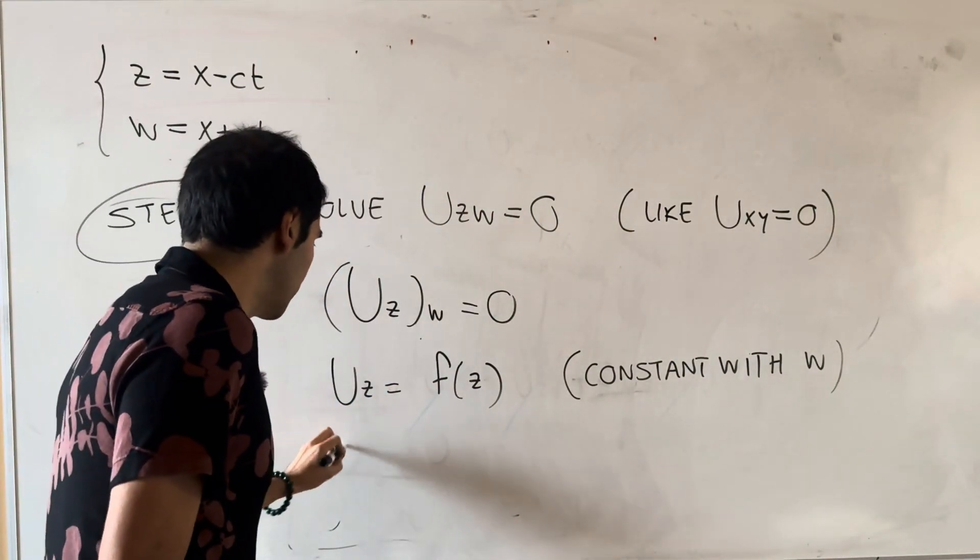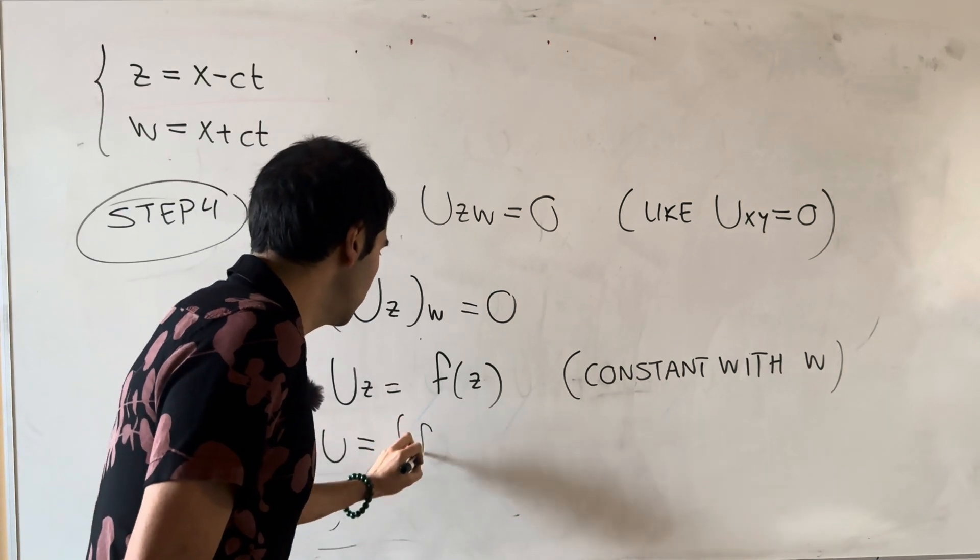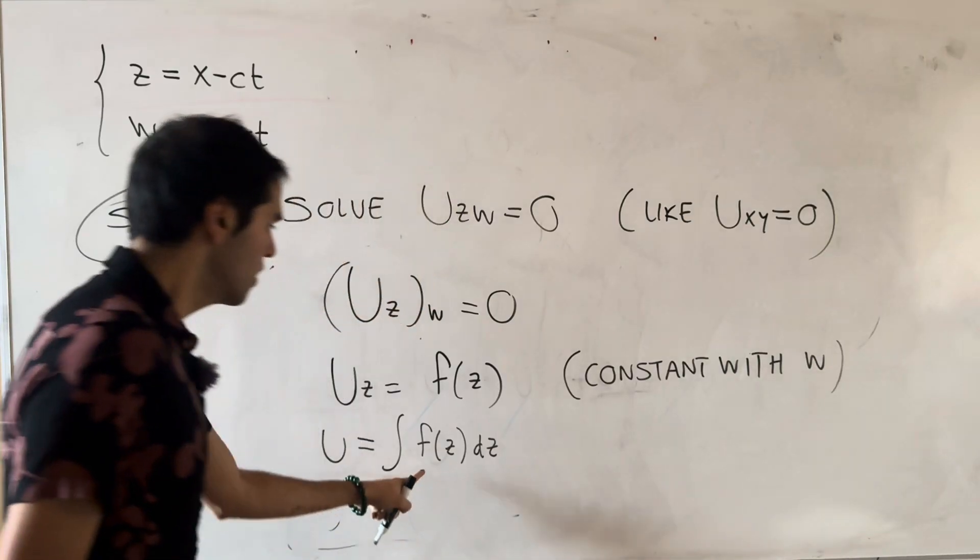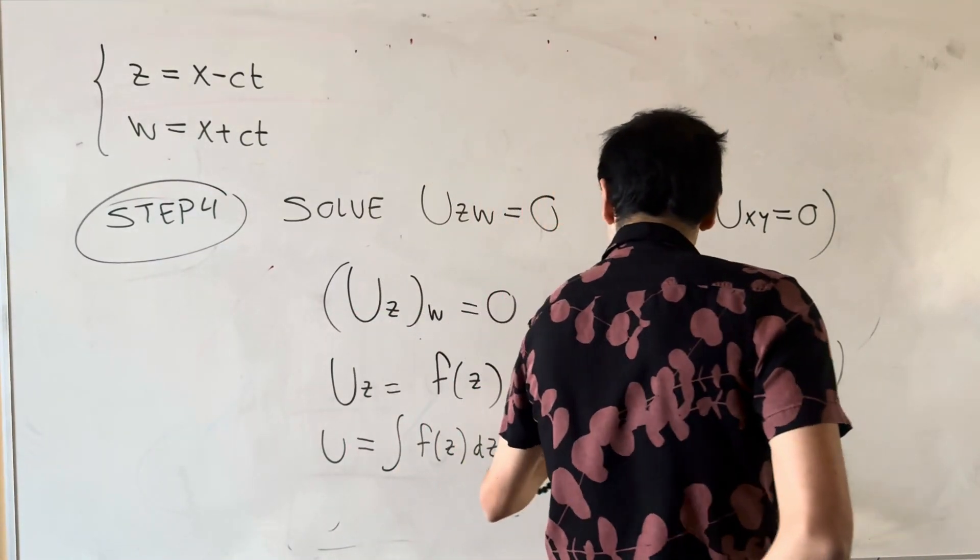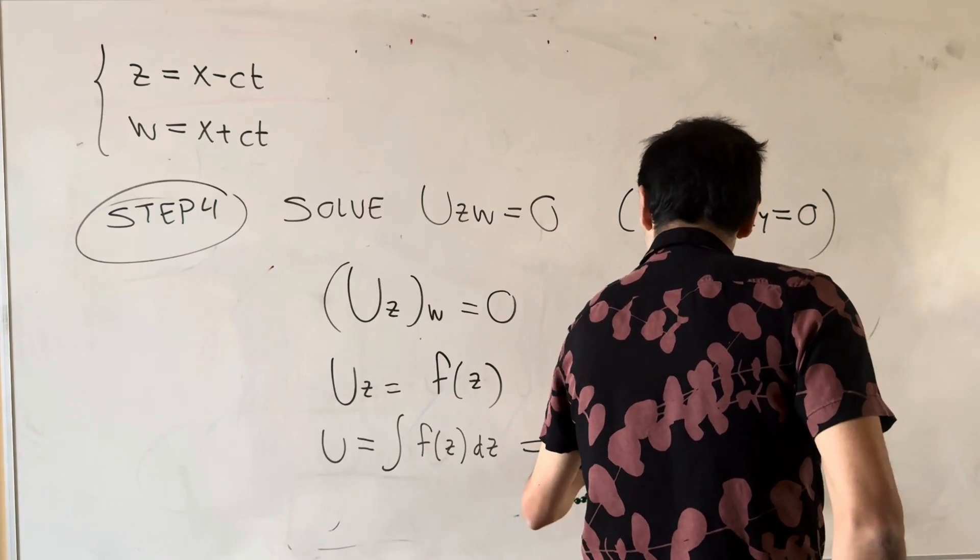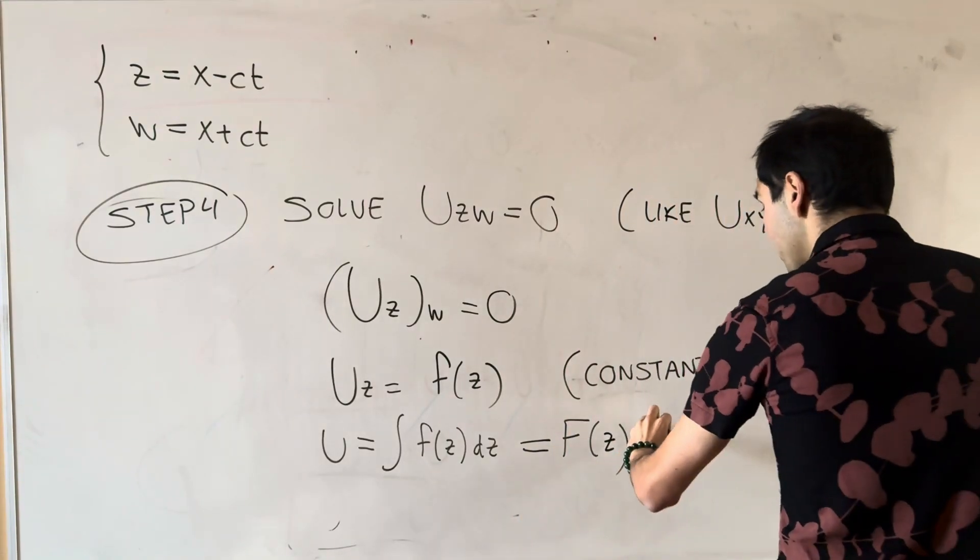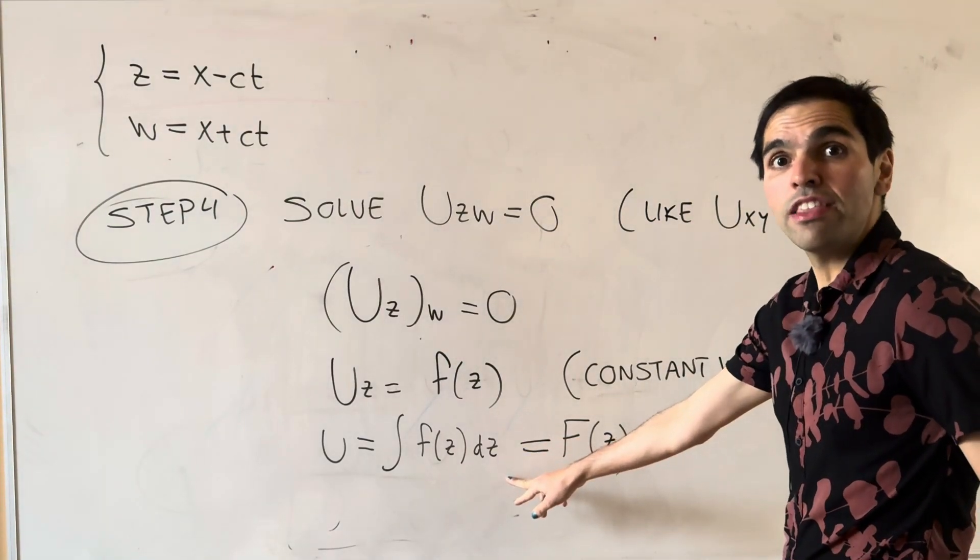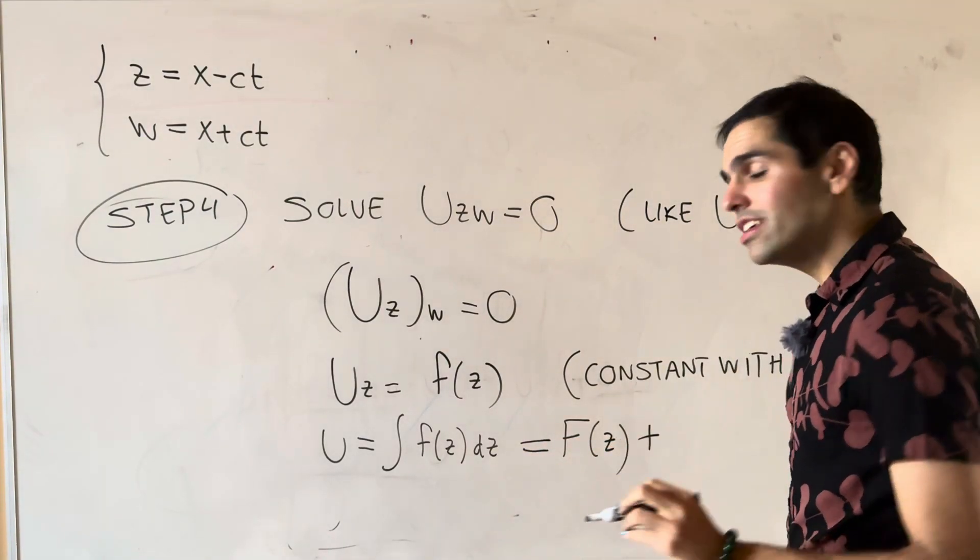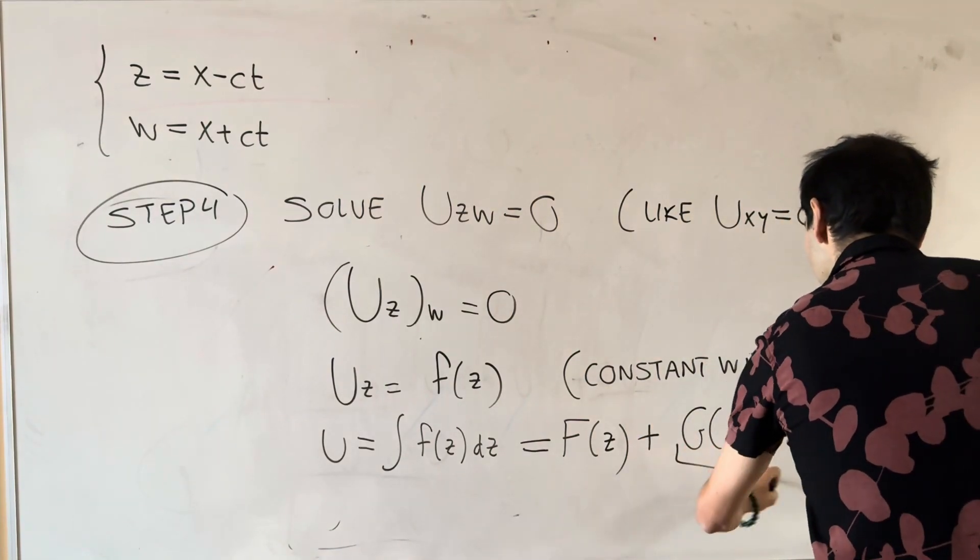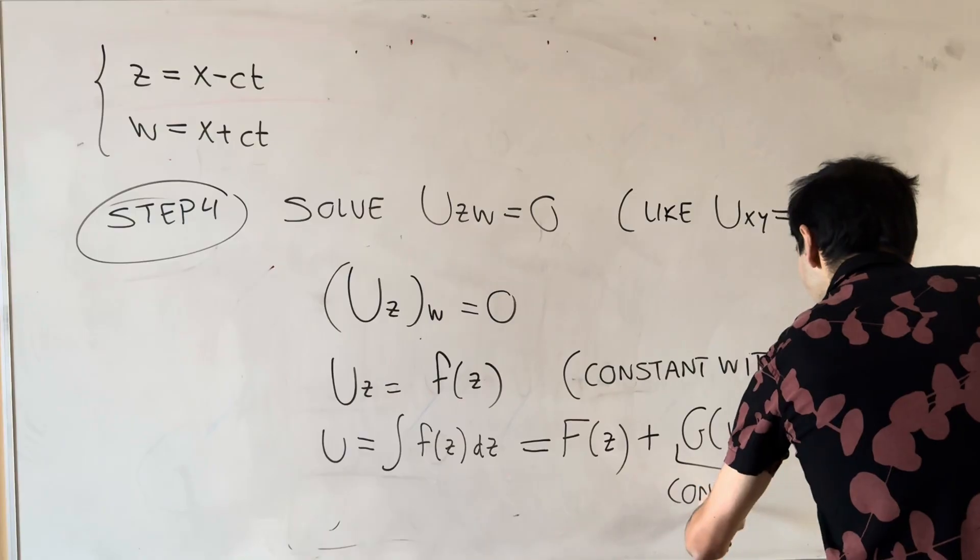And now, to get to u, we integrate. So integral of f of z dz, which is the antiderivative of f. So capital F of z. And plus a constant, but the constant is with respect to z. So it is really a function of w. So g of w. So constant with z.